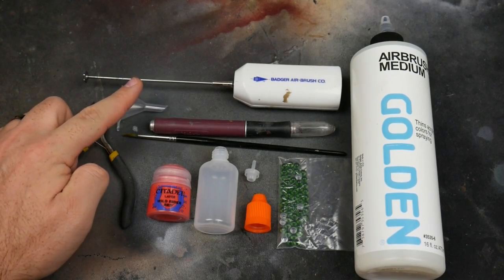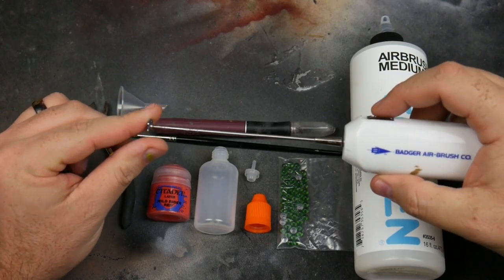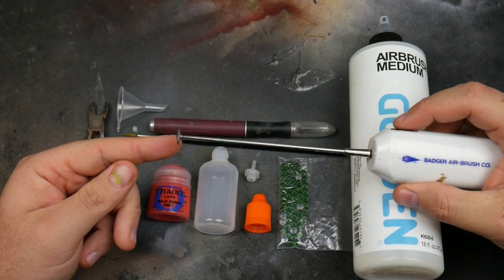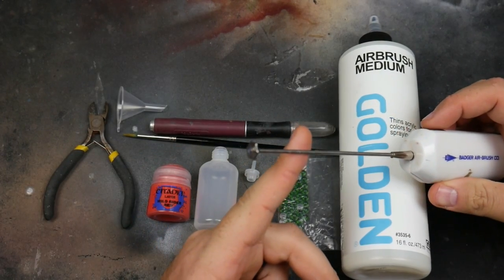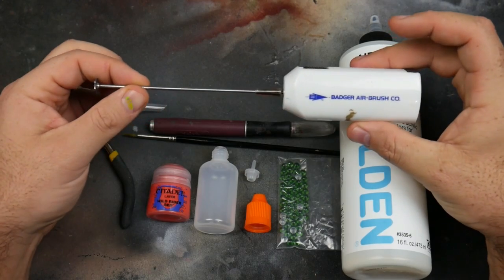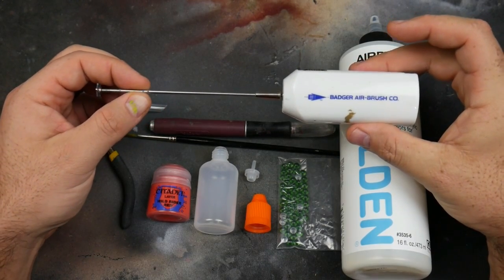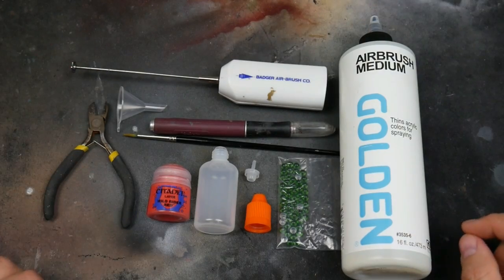A little tiny funnel, and then the piece that makes all of this happen: this awesome Badger Airbrush Company mixer. It's a little power mixer with this spinning head. This thing makes all of it happen, trust me.